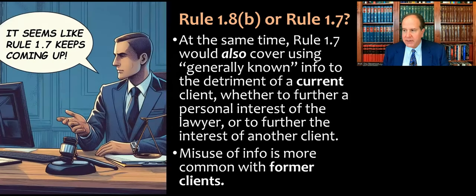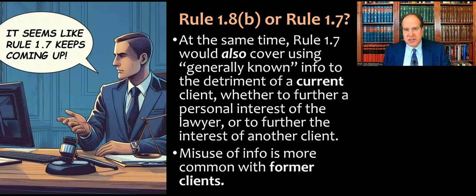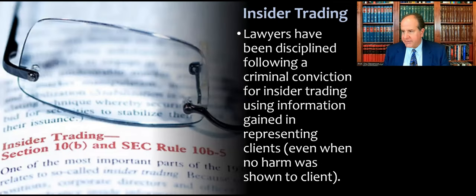Keep in mind that Rule 1.7 often applies even when another conflict of interest rule applies. Rule 1.7 could also cover using generally known information to the detriment of a current client — whether to further a personal interest of the lawyer or to further the interest of another client. Misuse of information is more common with former clients, which means if you are disciplined by the state bar for violating 1.8b, there is a good chance they will also say that you violated 1.7.